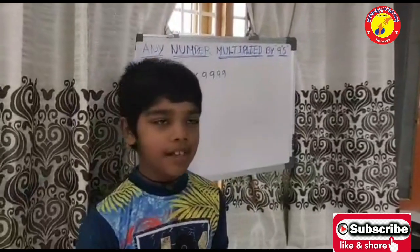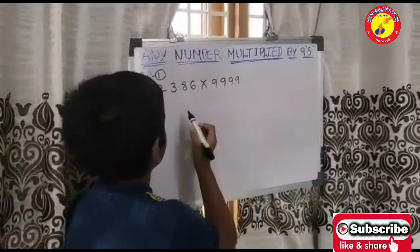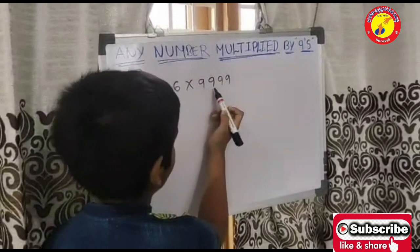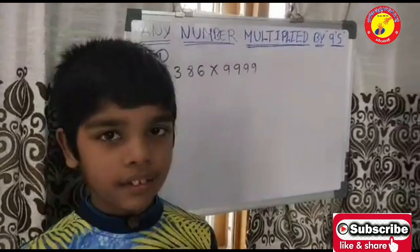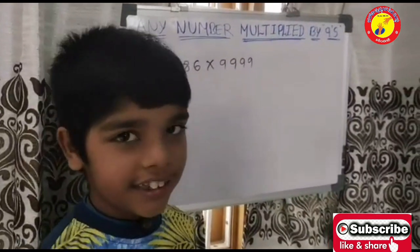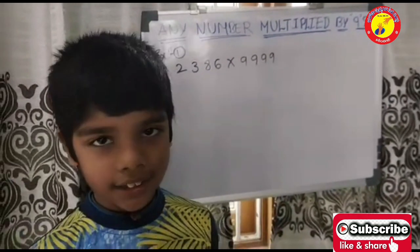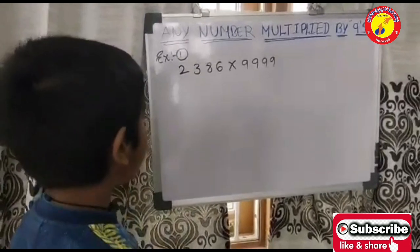Here are examples. Example number 1, 2386 x 9999. What I told conditions, all conditions are satisfied for this number.